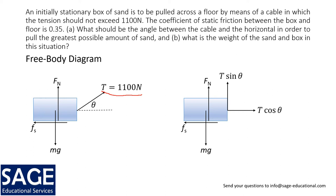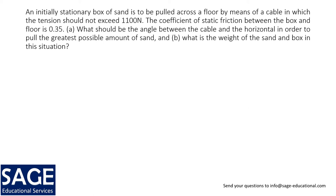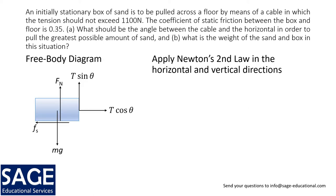Going forward we would be using this free body diagram. Let's start with applying Newton's second law in the horizontal and vertical directions. In the horizontal direction we have only T cosine theta and fs and they are in opposite directions, so that gives me the equation T cosine theta minus fs equals max.